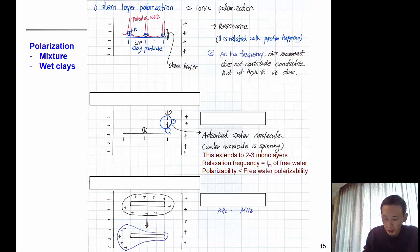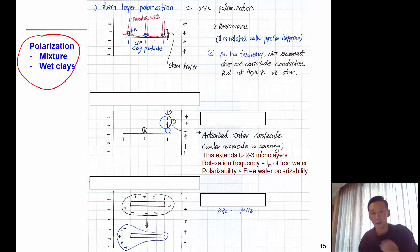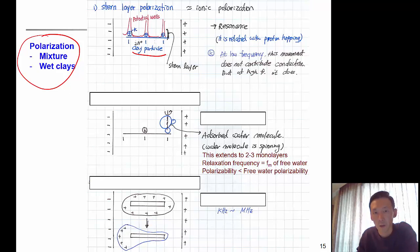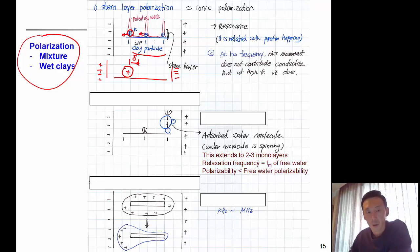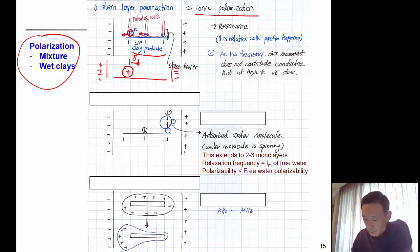In wet clay, let's look at the polarization of clay material. A clay particle has some potassium attached at very close proximity to the clay surface — this is called Stern layer polarization. This potassium or cation can move only by a small amount when the field is applied, moving slightly toward the negative electrode (anode). This is called ionic polarization, similar to ionic polarization in a single molecule. At low frequency, this movement does not contribute to conduction, but at high frequency, it can contribute.